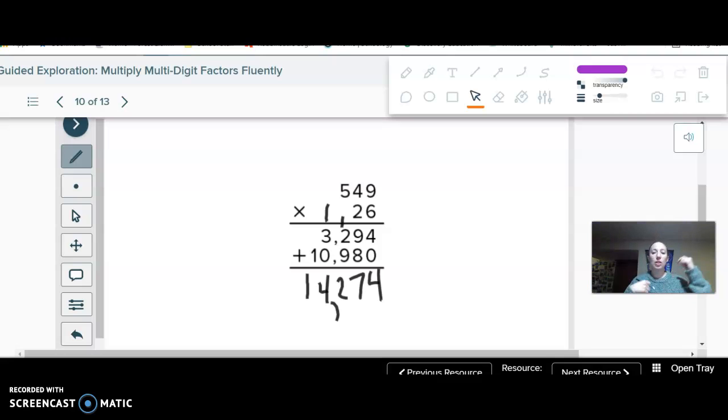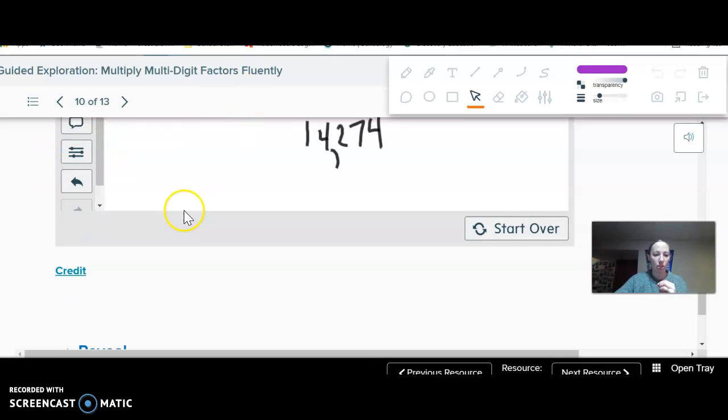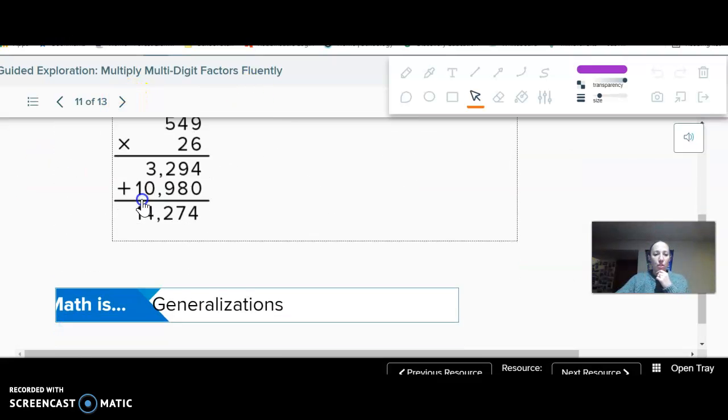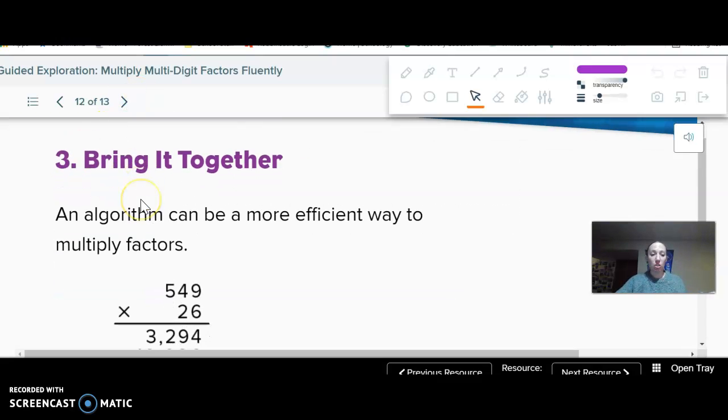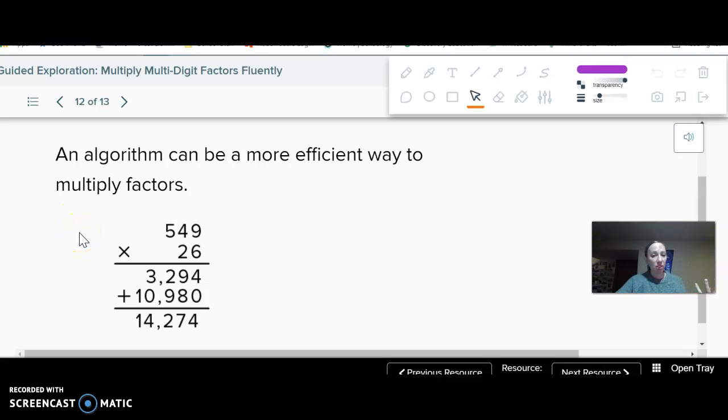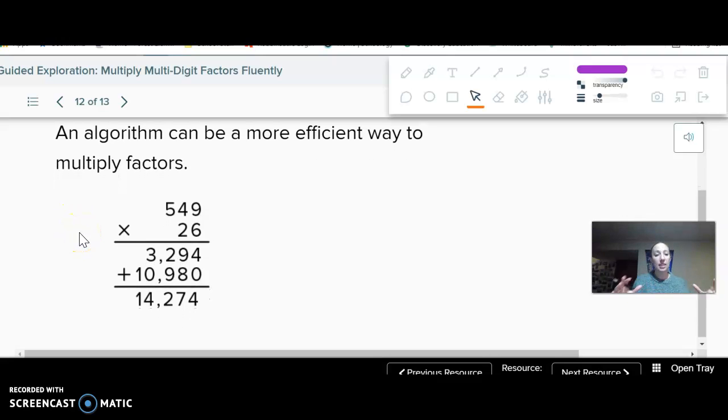So 14,274 is my final answer. That's how I would use an algorithm to multiply by multi-digit numbers. It can be more efficient. Like I said in the last lesson, it takes up a little bit less space than doing the whole area model. But if it doesn't make sense to you, or if it's just harder for you, do it with the area model.